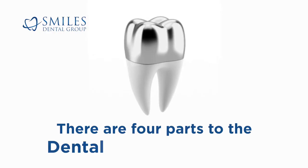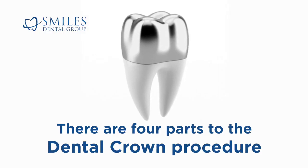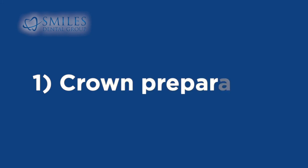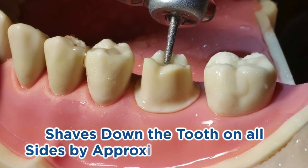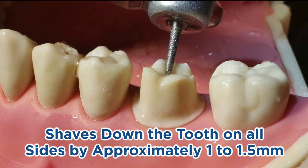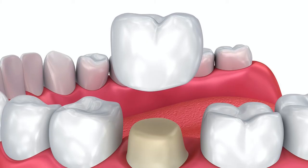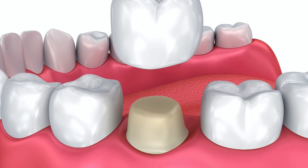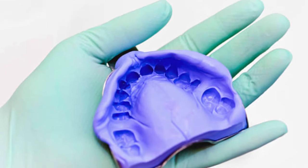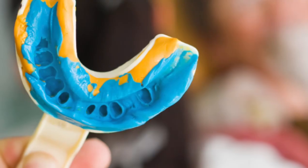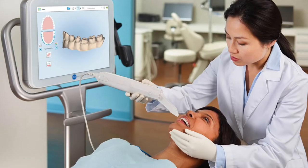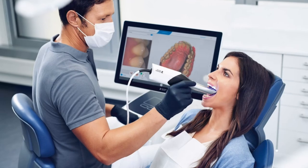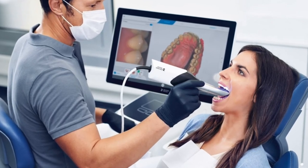There are four parts to a dental crown procedure. First, crown preparation — the general dentist shaves down the tooth on all sides by approximately 1 to 1.5mm to accommodate the custom made crown. Second, impression — impression material is used to make an accurate mold of the tooth being treated as well as surrounding teeth and the bite. This can also be accomplished digitally using a specialized scanner instead of impression material.